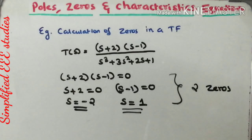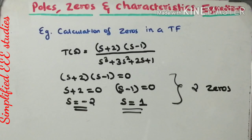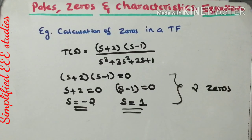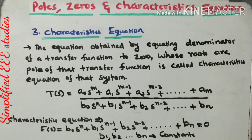Both poles and zeros are very essential for determining the stability. By analyzing the values of poles and zeros, we can predict the stability. For example, if the poles are locating at the right half of the s-plane, the system is unstable. If the poles are at the left half of the s-plane, the system is stable. If the poles are at the origin, the system is marginally stable. This concept will be explained further when discussing stability of a control system.